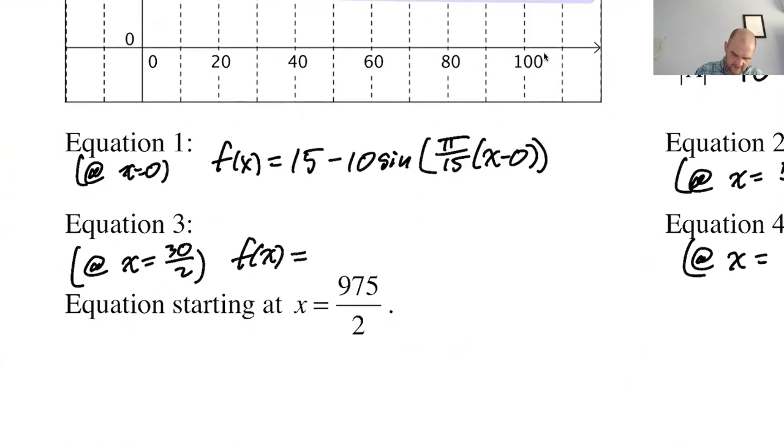And then the next one is going to be a positive sign. So f(x), I'm going to keep at it, 15 plus 10 sine, π over 15, x minus 30 over 2.